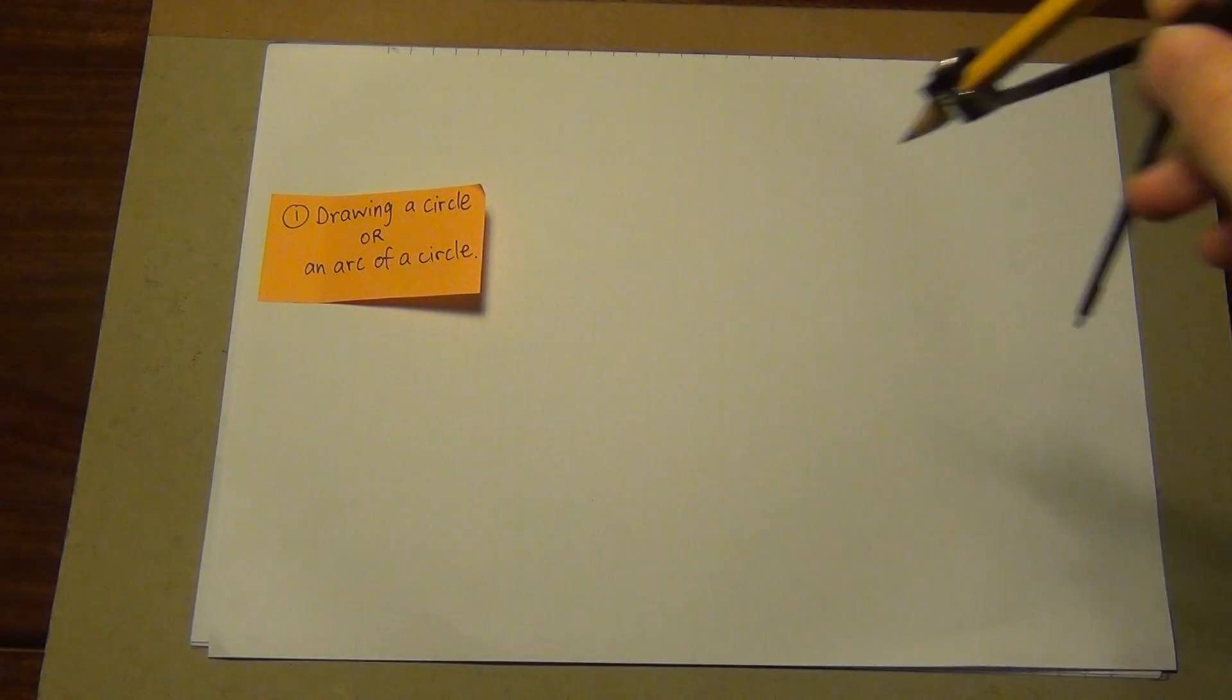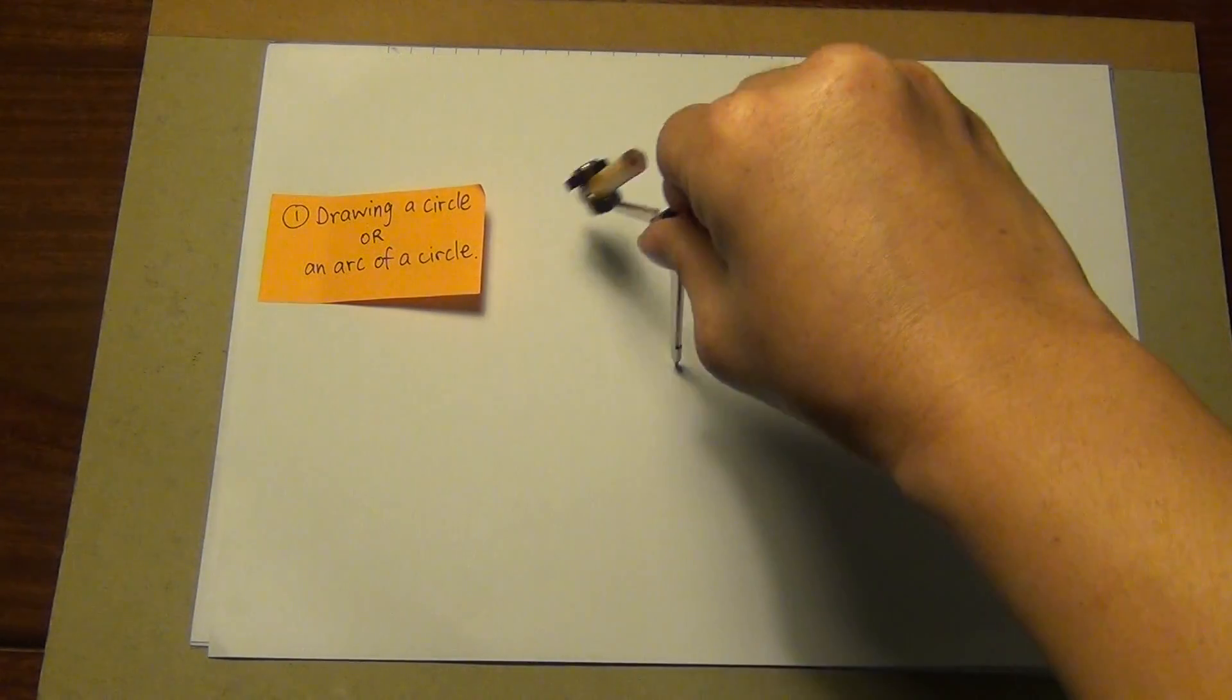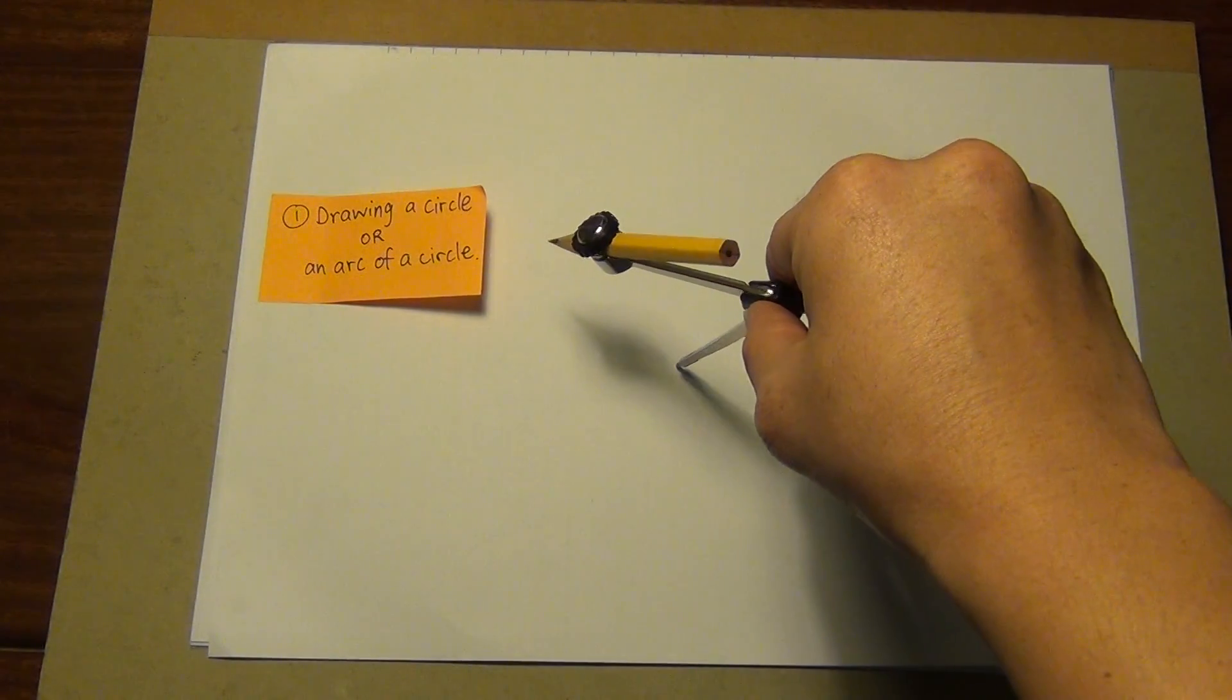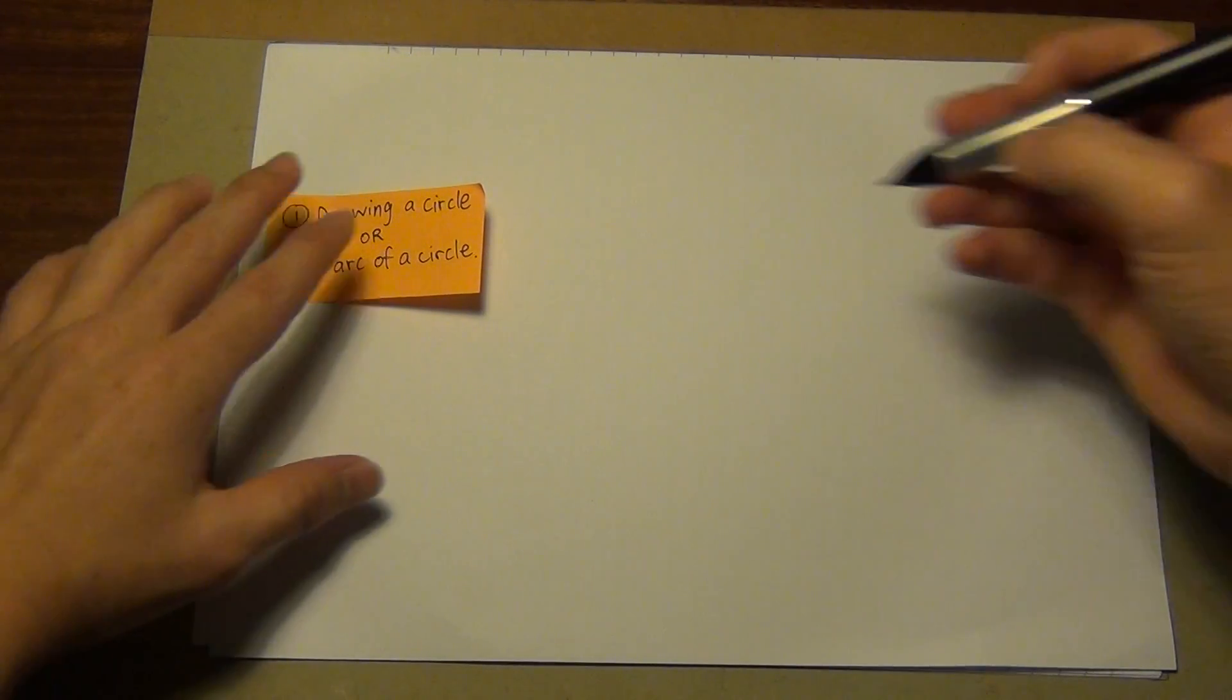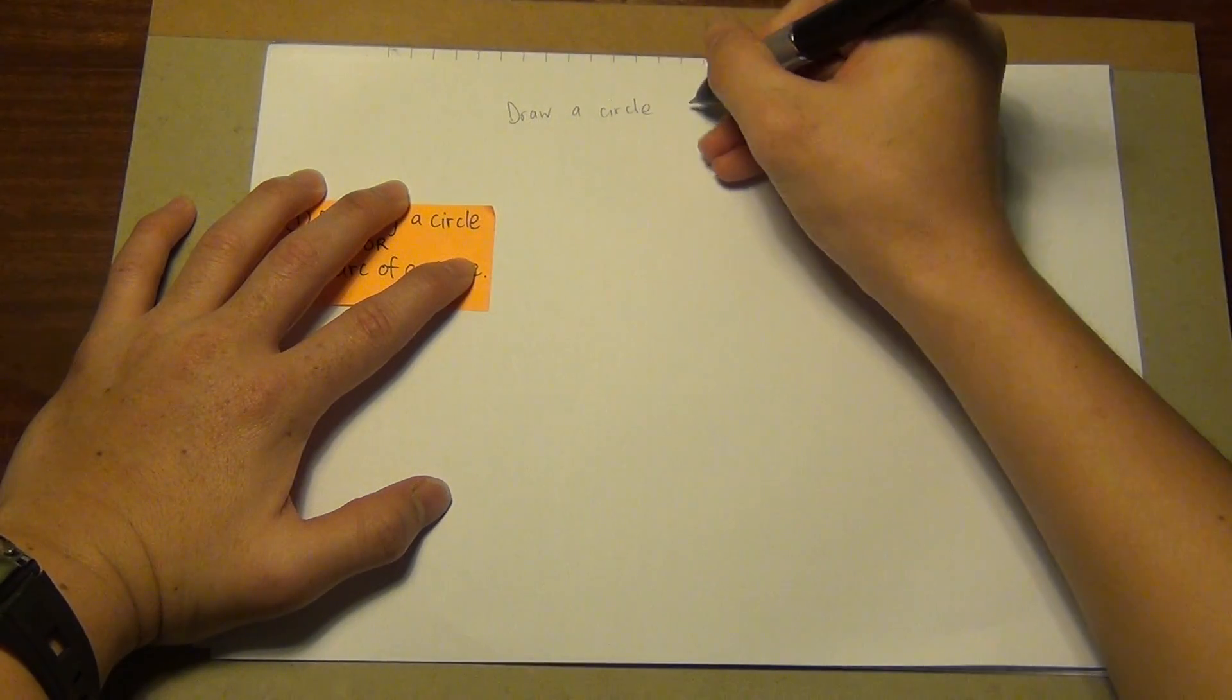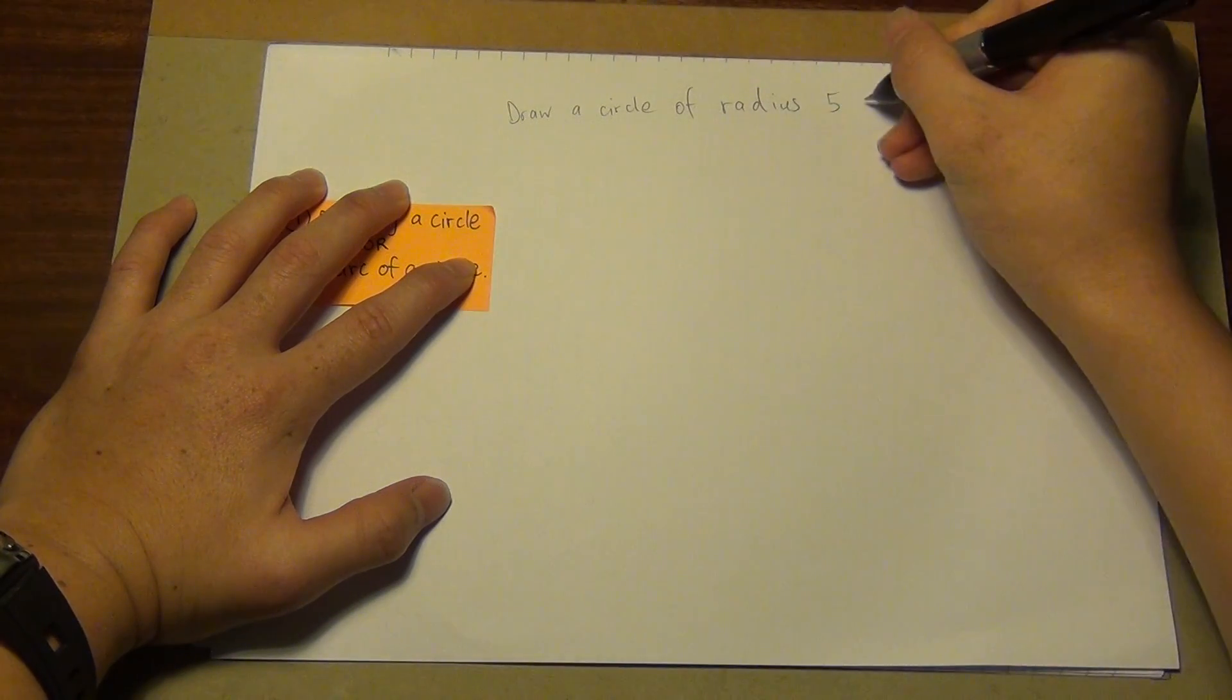As you can see, how I'm going to use this compass is there is a twisting motion. Therefore I'm able to draw a circle or an arc. Let's take a look if I want to draw a circle of radius 5cm.